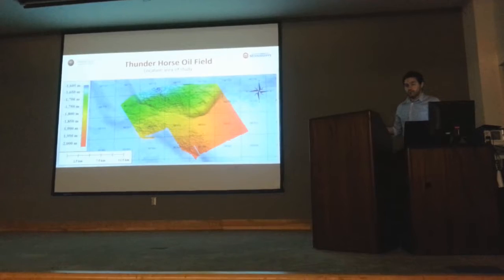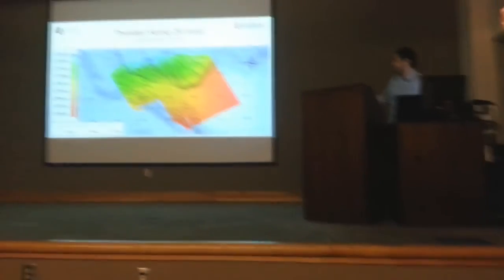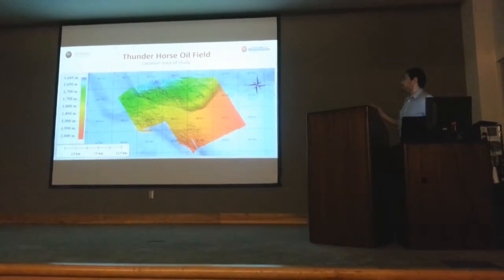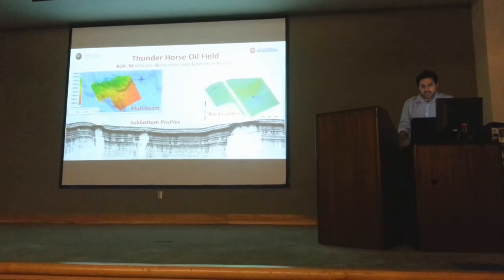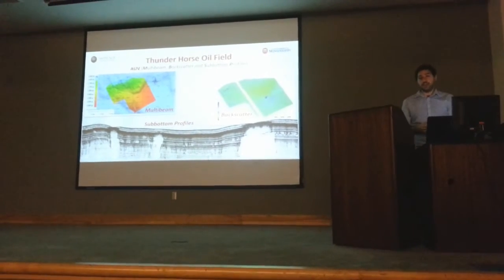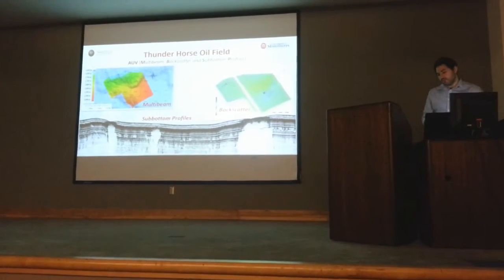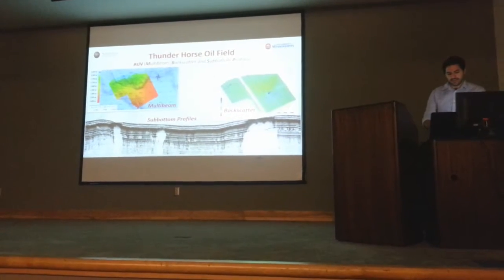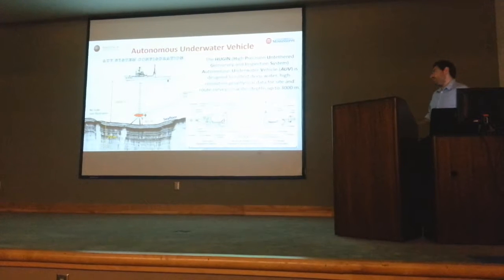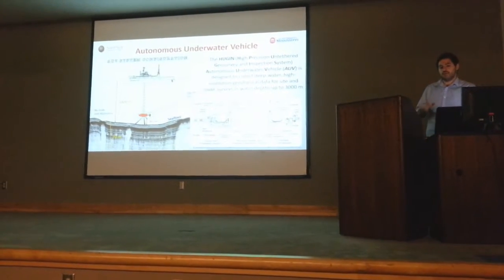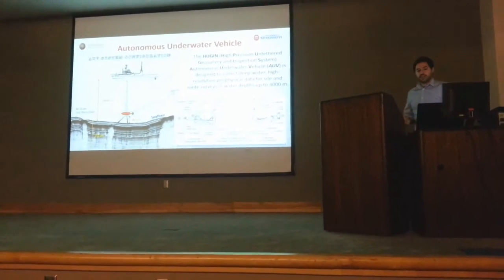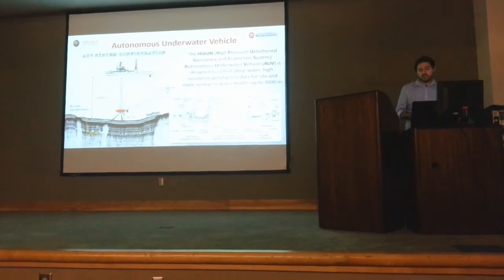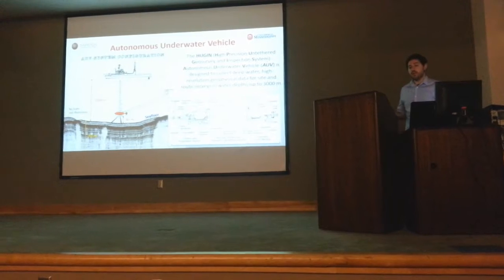The survey area is a regular polygon covering 19 square miles, located within 18 blocks. The depth of the seabed ranges from 1,600 to 2,000 meters below the sea surface. The AUV acquires simultaneously multi-beam acoustic data, backscatter data, and sub-bottom profile acoustic data. But the question is, what is an AUV? An autonomous underwater vehicle, or AUV, is a submarine which travels very close to the seabed without requiring input from an operator.